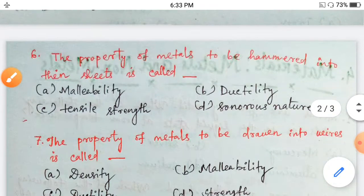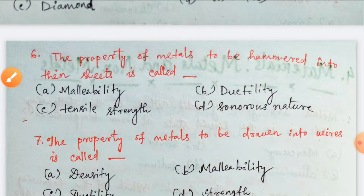Next, Question Number 6. The property of metals to be hammered into thin sheets is called malleability, ductility, tensile strength, sonorous nature. The property in which we hammer the metal to make very thin sheets, for example, the aluminium foil that we use for food wrapping, how thin it is. This property is called malleability. Option A.